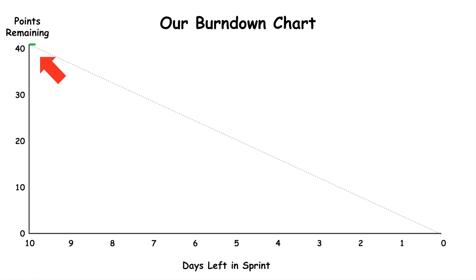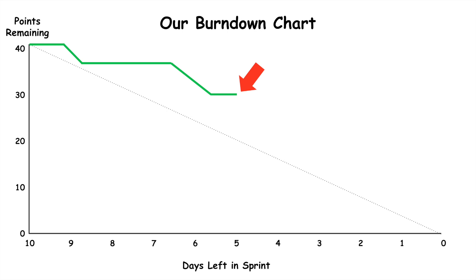Suppose the team signs up to complete 40 points in a two-week sprint. The burndown chart will show 40 points and 10 days remaining. Suppose the team then completes 10 points in the first week — the chart will show 30 points and 5 days remaining. This location on the graph will be well above our pacing line, giving us early warning that our sprint goal may be in jeopardy.